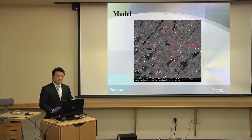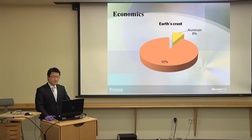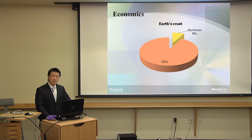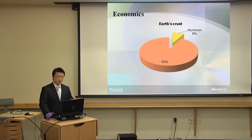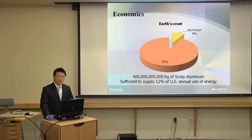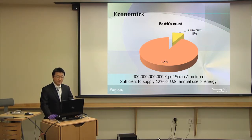Now that we've learned about the mechanism, let's move on to the economics. There are several reasons why we are interested in this alloy, but one of the biggest reasons is its abundance. For example, aluminum composes 8% of earth's crust. In fact it is the third most abundant element on earth after oxygen and silicon. Also, we are interested in aluminum because it is recyclable. There are 400 billion kilograms of scrap aluminum lying on the surface. These scrap aluminum are sufficient enough to supply 12% of US annual energy use.